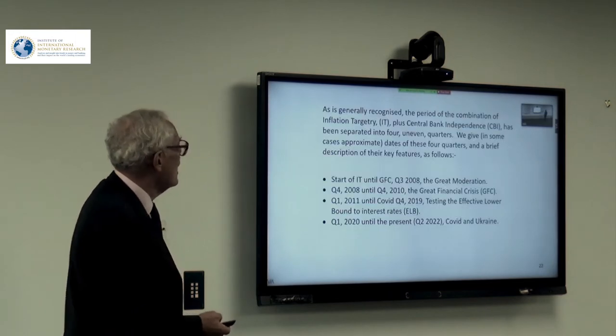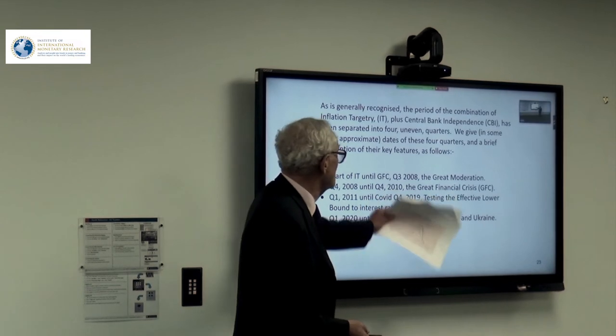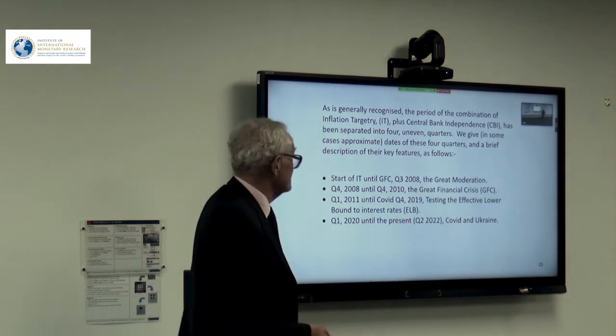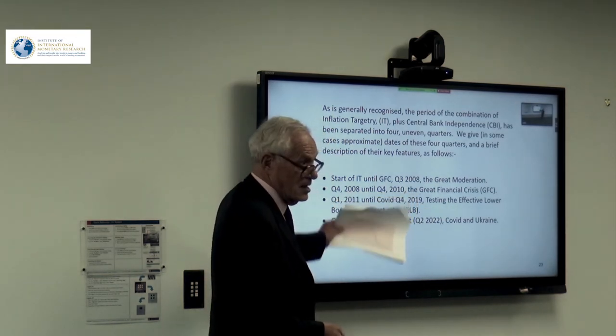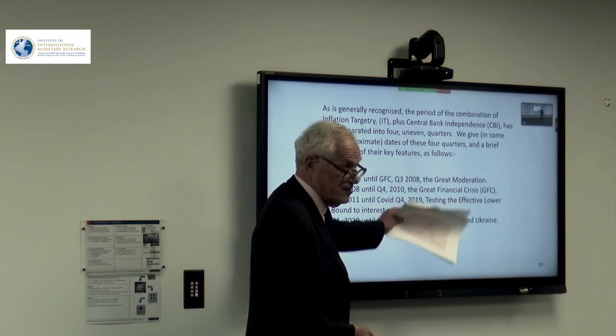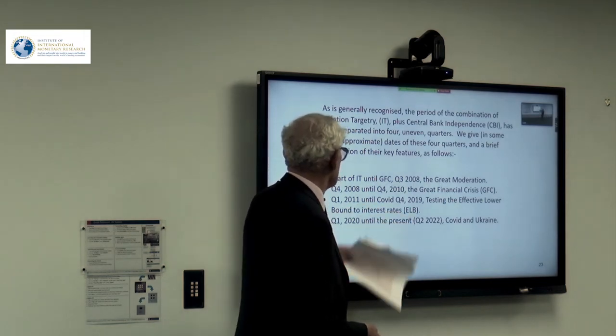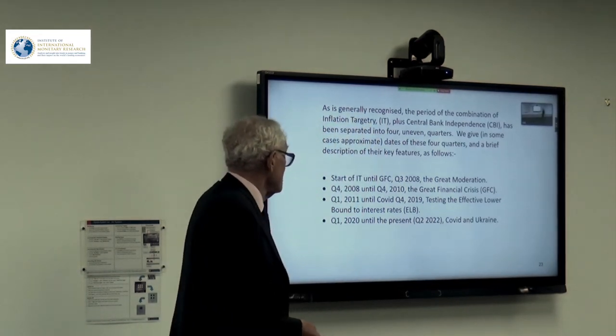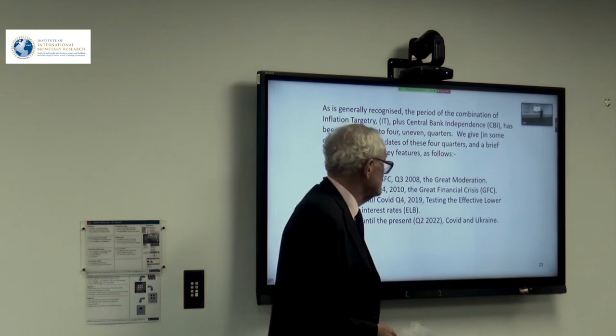The start of inflation targeting until the Great Financial Crisis, from 1997 in the UK's case until Q3 2008, to be described as the Great Moderation. Then the Great Financial Crisis. The start of that is fairly clearly marked as the last quarter of 2008. The end of it is not so clearly marked. It's slightly arbitrary, taking the end period as Q4 2010. Then taking the period from Q1 2011 until COVID struck as testing the effective lower bound of interest rates. And then we've taken the period from the beginning of the COVID crisis, Q1 2020, until the present.